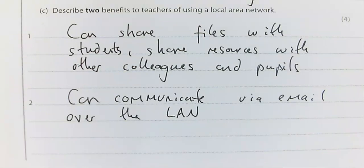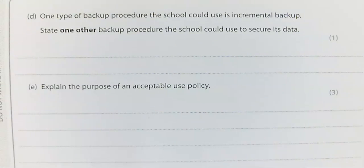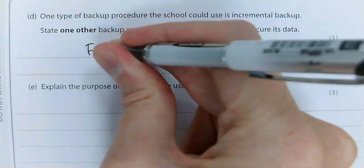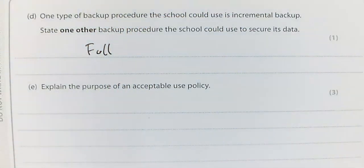Now into question D, we're looking at backup procedures. Backup is where you save files, for example on a tape drive, so that if something happens to the servers, the files are backed up and you can access them again. One type of backup procedure the school could use is incremental backup — that's where the changes made during the day are backed up rather than necessarily the whole thing. Other options include a full backup, a partial backup, or grandfather-father-son, where you're overwriting tapes. There are loads of different things you could write there.